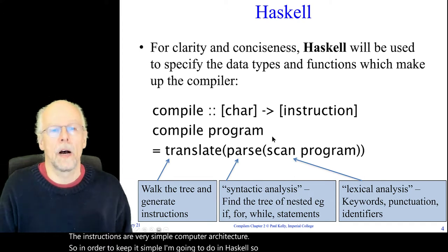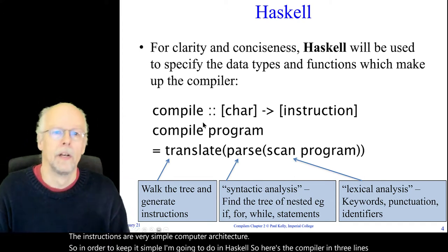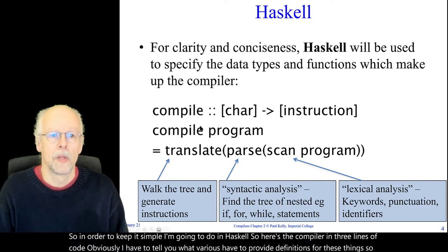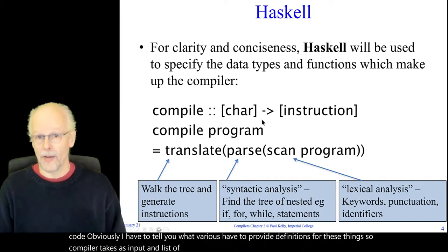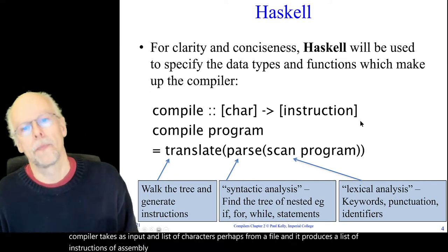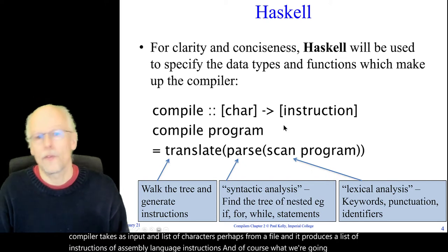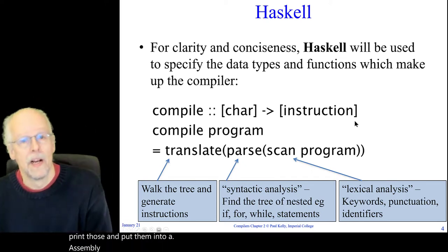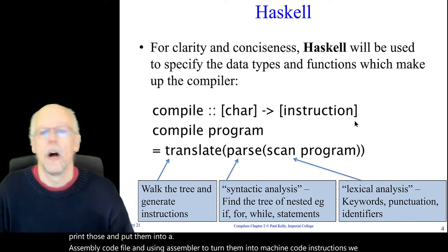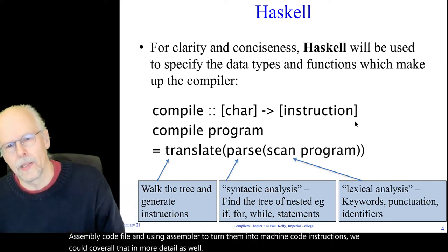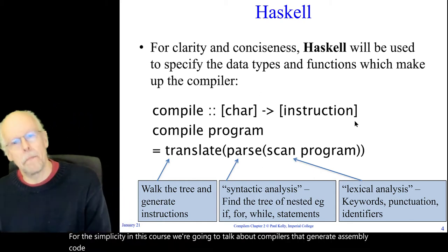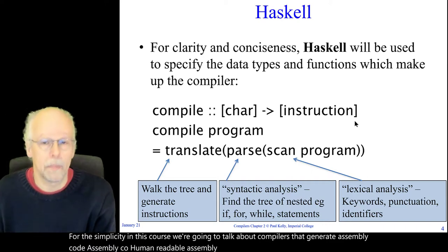In order to keep it simple, we're going to do it in Haskell — here's the compiler in three lines of code. A compiler takes as input a list of characters, perhaps from a file, and produces a list of assembly language instructions. We're going to print those and put them into an assembly code file and use an assembler to turn them into machine code. In this course we're going to talk about compilers that generate human-readable assembly code as output.